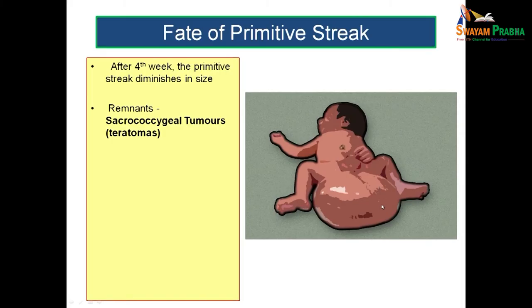What is the fate of the primitive streak? After the fourth week of intrauterine period, the primitive streak gradually diminishes in size. Sometimes it may persist even after birth and is then known as sacrococcygeal teratoma — a large mass or tumor-like growth seen at the sacral region. This is said to be the most common tumor during the neonatal period.